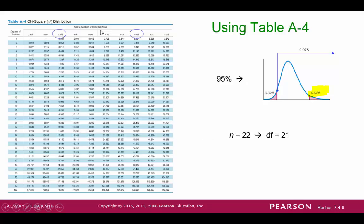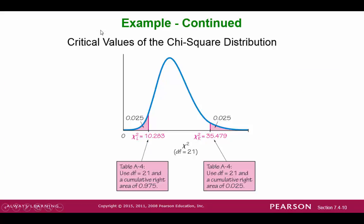With N equal to 22, our degrees of freedom is 21. We look at the 21st row and identify the values in the two columns. We get one critical value at 10.283 and another critical value at 35.479. So chi-square L, the critical value on the left, is 10.283, and chi-square R, the critical value on the right, is 35.479.